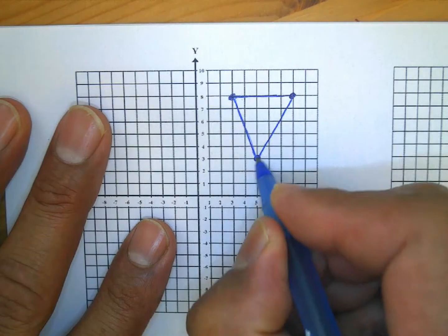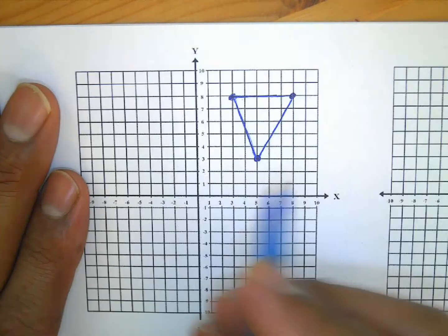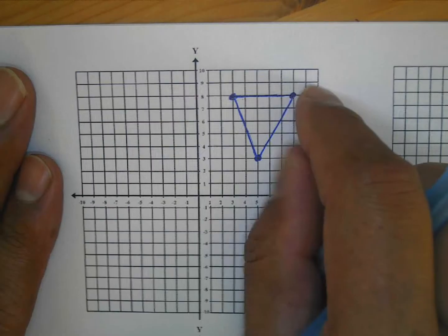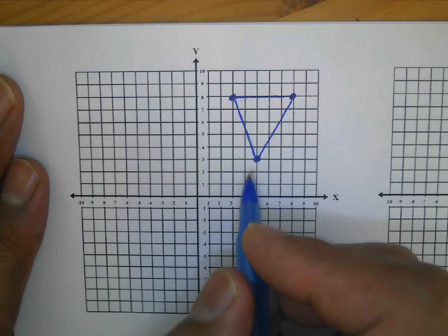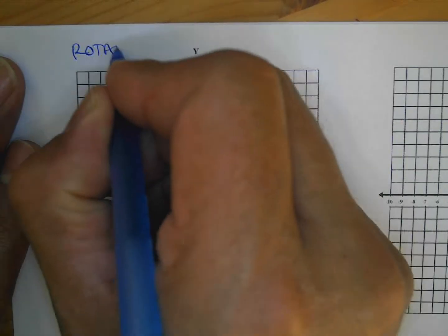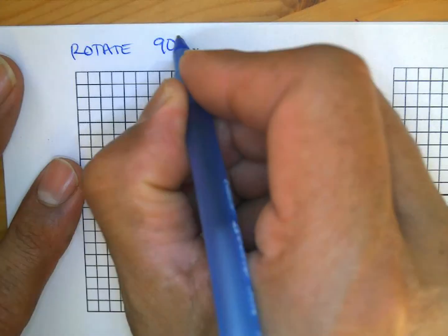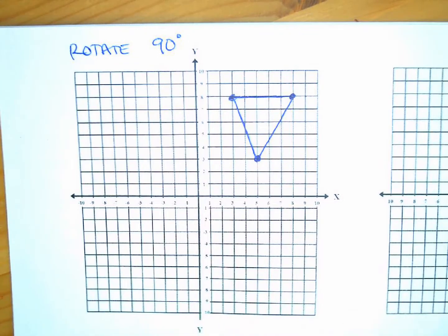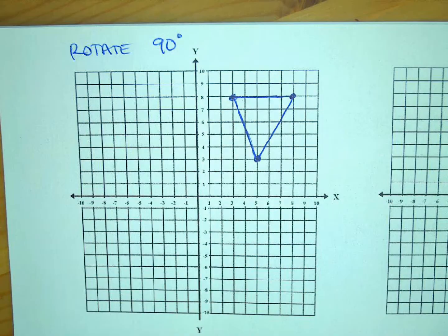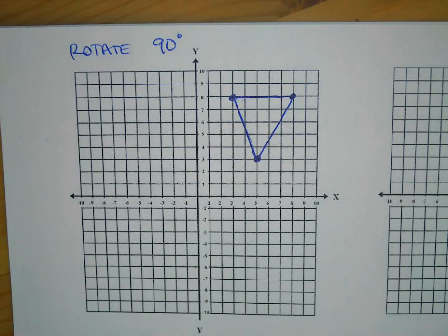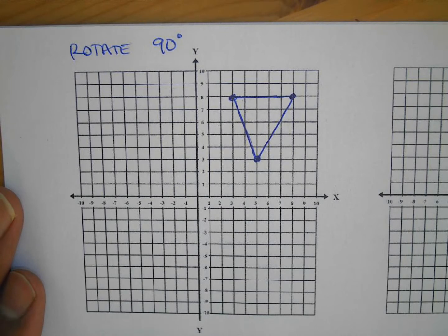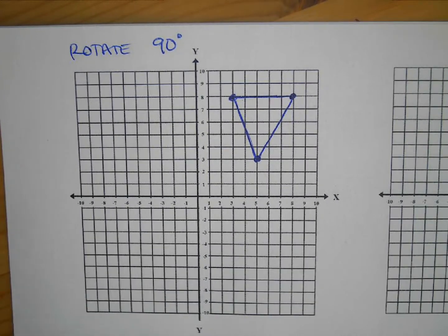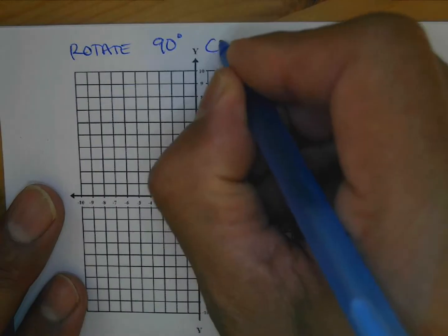Very similarly to the way we did one point at a time, when you have a shape you do the same thing. I'm going to rotate this one 90 degrees — and whether they ask you to sketch it or give the new coordinates, it's the same approach. I need to tell you clockwise or counterclockwise. Let's go clockwise.